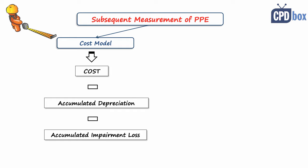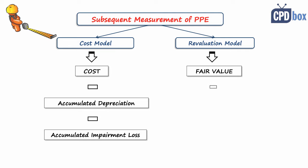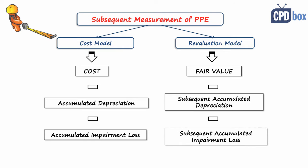The first one is the cost model, and under this model an item of property, plant and equipment shall be carried at its cost less accumulated depreciation and less any accumulated impairment losses in line with IAS 36. The second model is the revaluation model, where an item of property, plant and equipment is carried at its revalued amount, which is fair value at the date of revaluation less any subsequent accumulated depreciation, less any subsequent accumulated impairment losses.